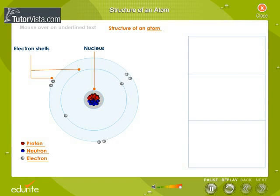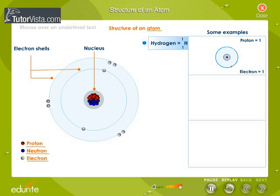Shown here are a few examples. If an atom has one proton and one electron, it forms an atom of hydrogen. But if the number of protons, electrons, and neutrons are 8 each, then we have an atom of oxygen.